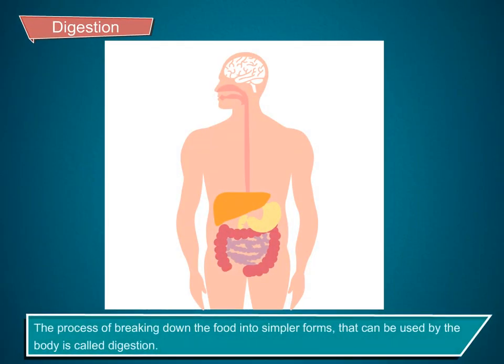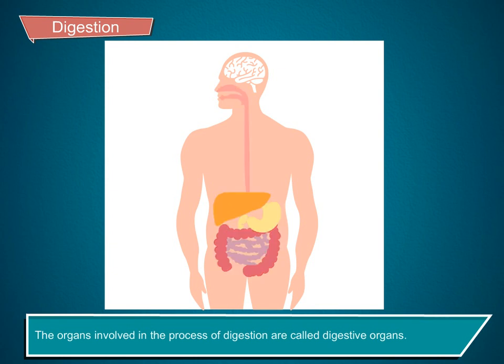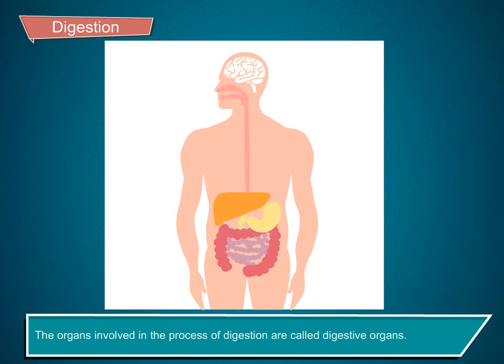Digestion. The process of breaking down the food into simpler forms that can be used by the body is called digestion. The organs involved in the process of digestion are called digestive organs.